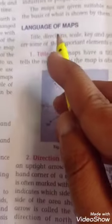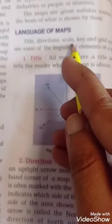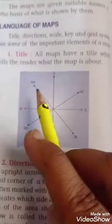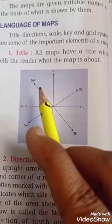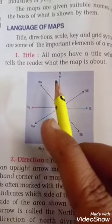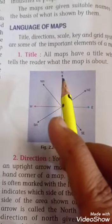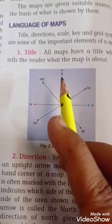Title, direction, scale, key and grid system are some of the important elements of a map. Underline with pencil the main elements of maps are title, direction, scale, key and grid system.